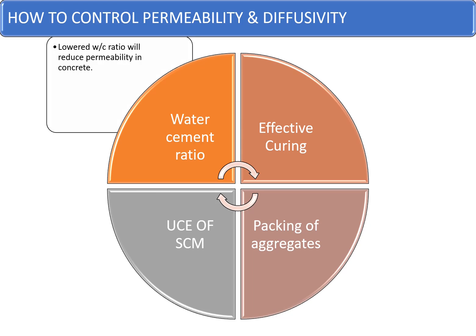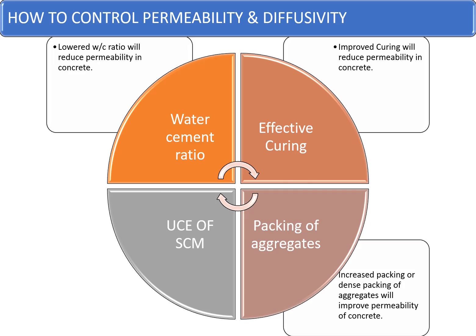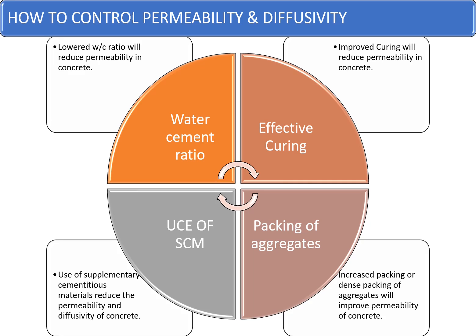Lower water-cement ratio will reduce the permeability in concrete. Improved curing will reduce the permeability in concrete. Increased or dense packing of aggregates will improve the permeability of concrete. And use of supplementary cementitious materials will reduce the permeability and diffusivity of the concrete, or improve the properties of durability of concrete. These are the four pillars through which we can control the permeability and diffusivity, thereby improving the durability of the concrete mixes.